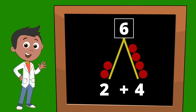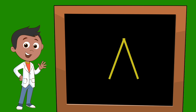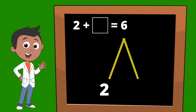Let's do the same equation, but this time our mystery number is one of our add-ins. This equation reads: two plus what equals six. We're going to go ahead and start by creating a Math Mountain. We're going to start with our two, then put a box for our mystery number, and our total at the top is going to be the number six.